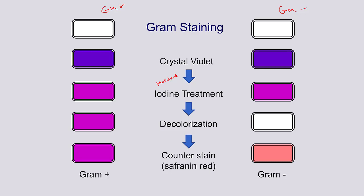You still have the same result on both sides, but then we follow that up with a decolorization step, which is essentially an alcohol wash. That wash is what the two bacteria respond differently to. Gram positive doesn't really have much of an effect from the decolorization step, but in gram negative that stain is lost as a result of the wash.